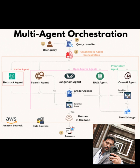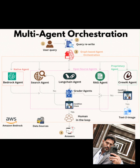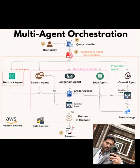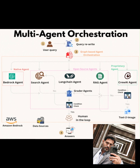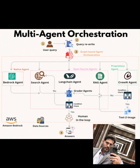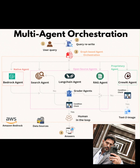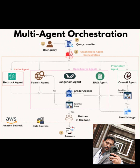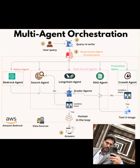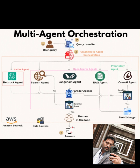This orchestration is graph-based because each agent's output feeds into the next, with the DAG ensuring efficient task routing and dependency management, often implemented using a workflow engine like Apache Airflow or Argo Workflows. Underpinning this entire workflow are the data sources that the agents rely on, including external web data fetched by the search agent and internal knowledge bases.